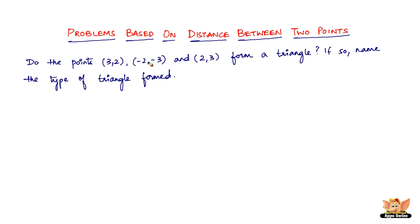First of all, how do you find out if these three points form a triangle? Let us name these points P, Q, and R. We just have to go ahead and find the distances PQ, QR, and PR. If the sum of any two of these distances is greater than the third distance, then the points P, Q, and R form a triangle.